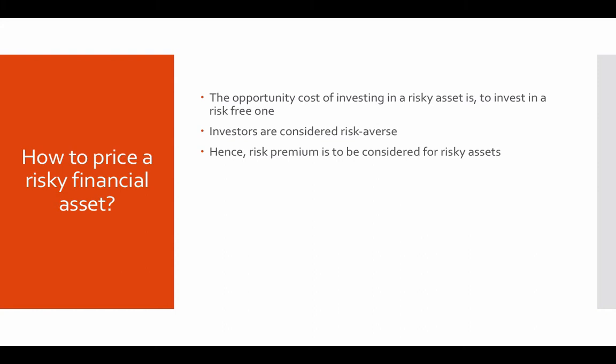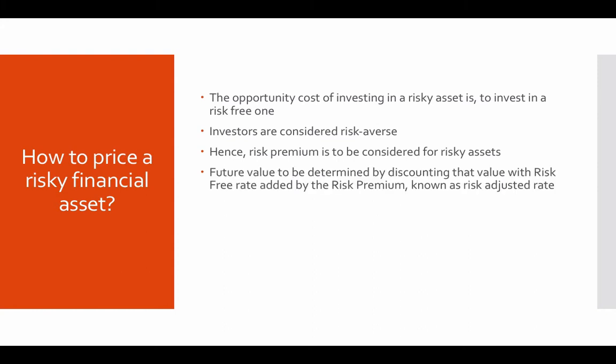Let's say a fixed deposit is giving you an interest rate of 7%, and you are expecting a return of 15% from a risky asset. The differential of 8% is the risk premium in this case. The future value is determined by what we expect the asset to grow to — a certain amount in the future. Since you may not be familiar with time value of money: in today's terms, tomorrow's money is worth less.